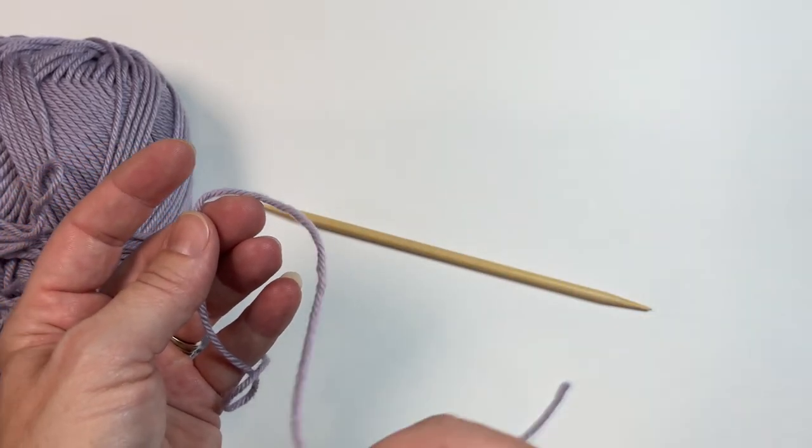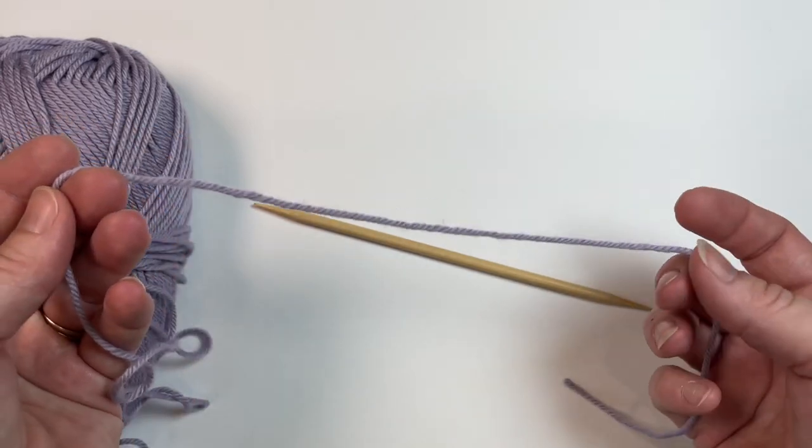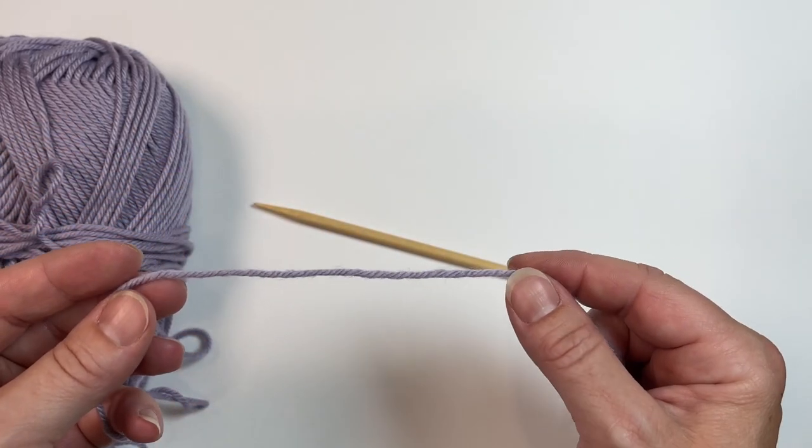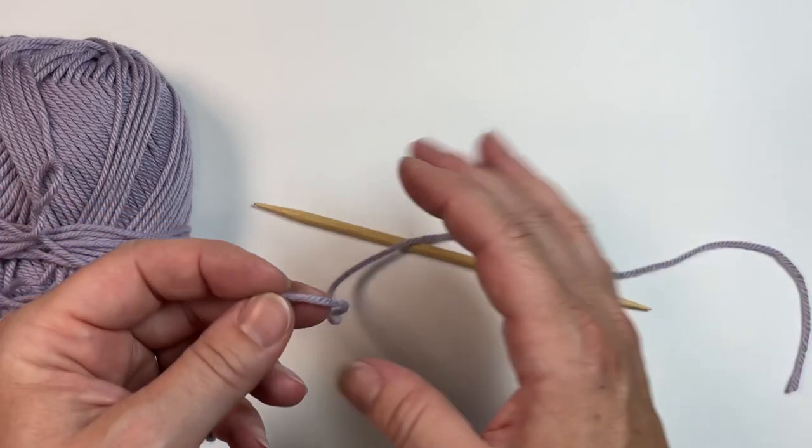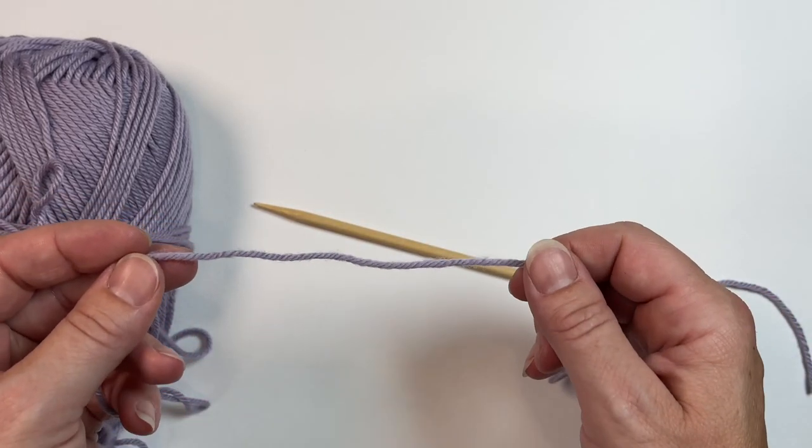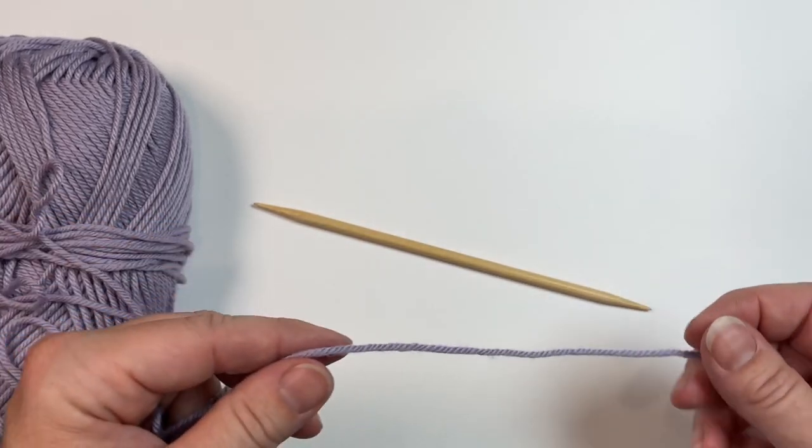are using your tail as part of the cast on, so you need it to be at least three times as long as the width of your cast on needs to be, and then you need a little extra after that.